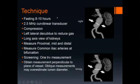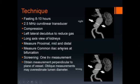Measurement technique: patients should be fasted for 8 to 10 hours. A 2.5 megahertz curvilinear transducer should be used. Compression may be applied to eliminate bowel gas. Another useful maneuver to eliminate bowel gas is to place the patient in the left lateral decubitus position. Long axis views of the kidneys should be obtained. Measurements should be obtained from the proximal, mid, and distal aorta. The common iliac arteries should be measured at the bifurcation. For screening purposes, a single transverse measurement will suffice.